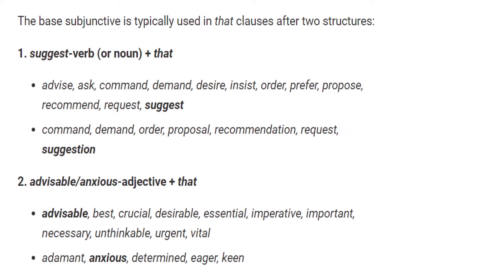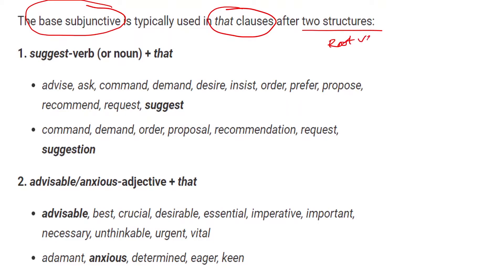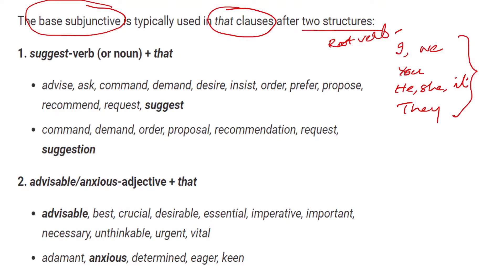The base Subjunctive is typically used in 'that' clauses after two structures. The base Subjunctive means root verb — the use of root verb with all subjects: first person, second person, third person, singular or plural, past or future or present. We use the root verb with certain verbs. We have to learn those verbs in English to use this Subjunctive mode.